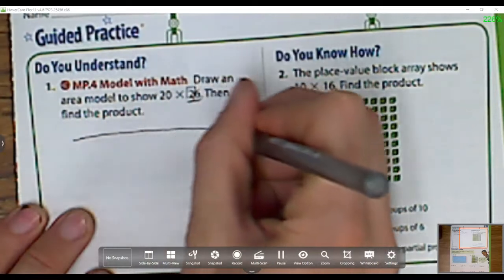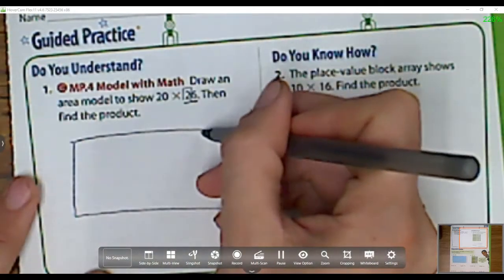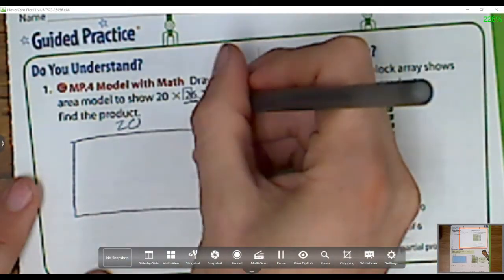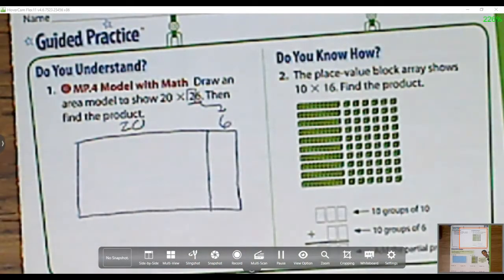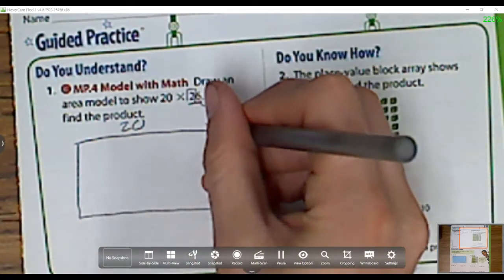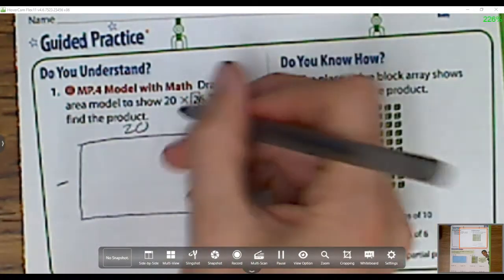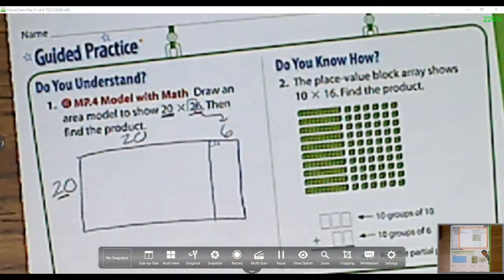This very first one is asking us to draw an area model to show 20 times 26, and then use an area model to find the product. What I'm going to do is break it up into its place value. So I have this 26, and I'm going to break it up into the tens and the ones. I'm going to draw a box. And remember, I break it up into 20, and then my ones is 6. On the side over here is what I'm multiplying it by, so I'm multiplying it by 20.